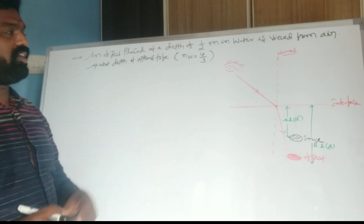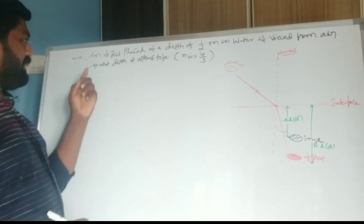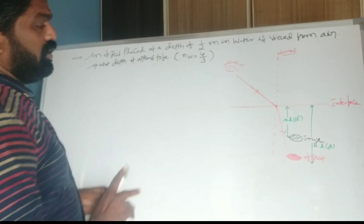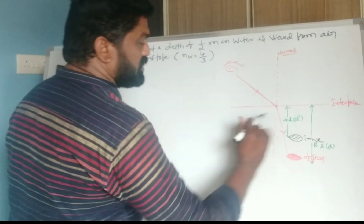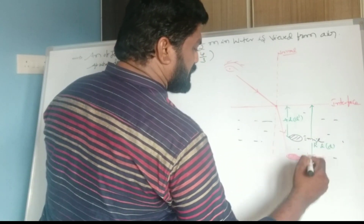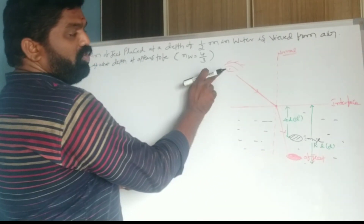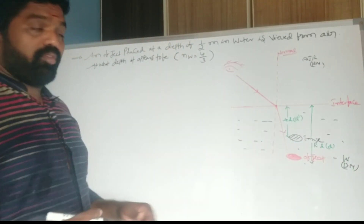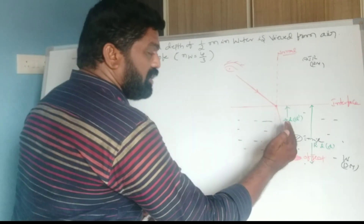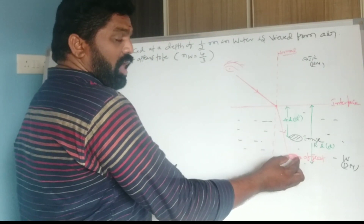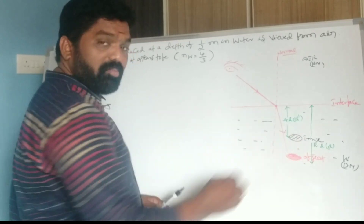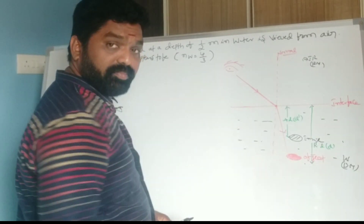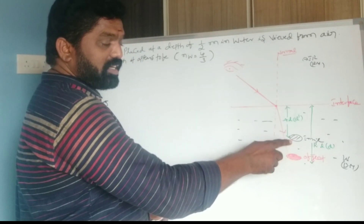Next problem: an object placed at a depth of half a meter in water is viewed from air. At what depth does it appear? The refractive index of water is 4/3. Water is the denser medium and air is the rarer medium. When light travels from denser to rarer medium, the refracted ray bends away from normal, so the image appears above the original object position — this is called apparent depth.